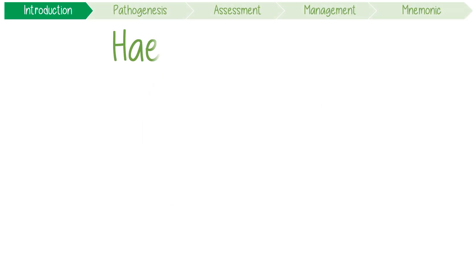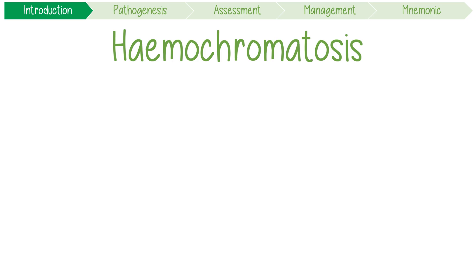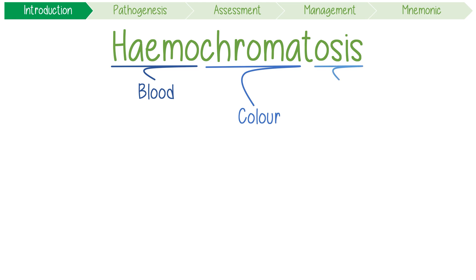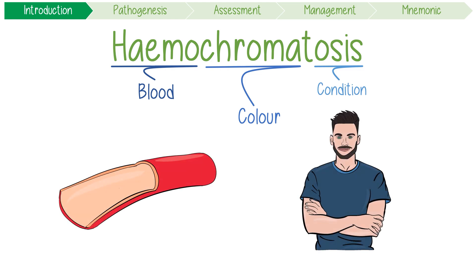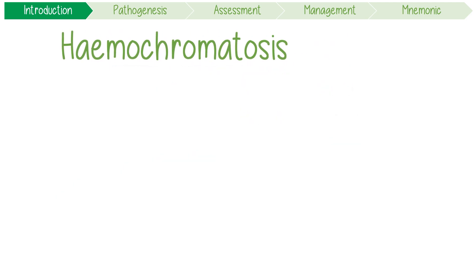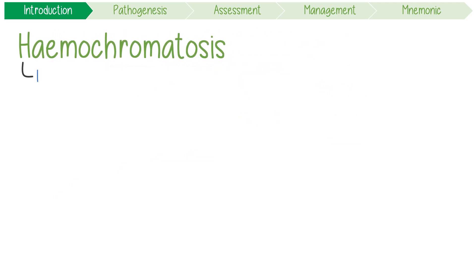Let's break down the term hemochromatosis: hemo refers to blood, chromat refers to color, and osis refers to a condition or disease. This makes perfect sense because hemochromatosis is a condition where your blood changes the color of your body tissues due to excessive iron deposition.